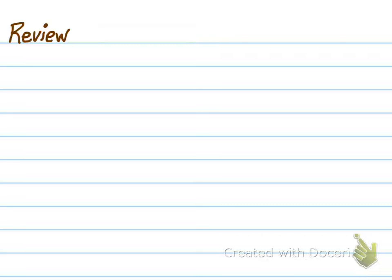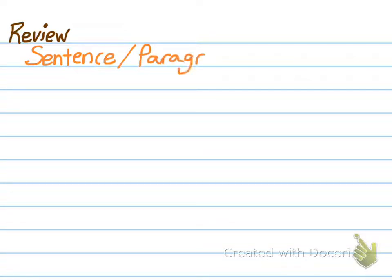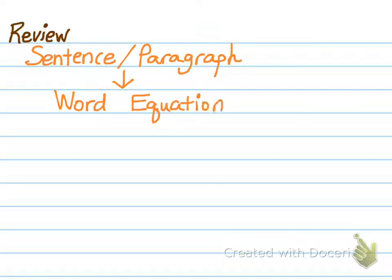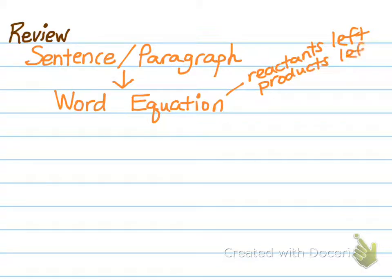Just to remind you about what we talked about previously: information for writing and balancing a chemical equation is going to be given to you in some sort of sentence or paragraph. You're going to take that sentence or paragraph, and the first thing you're going to do is write what's called a word equation. When we're talking about chemical reactions, remember we're always changing substances — we write our reactants on the left and our products on the right.